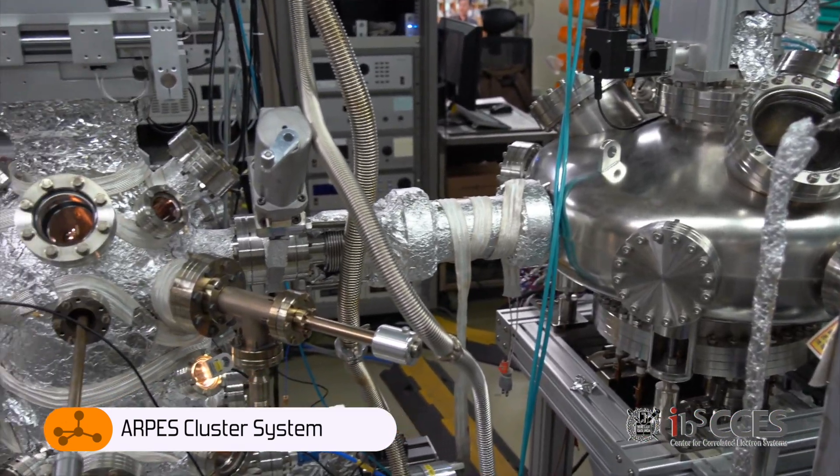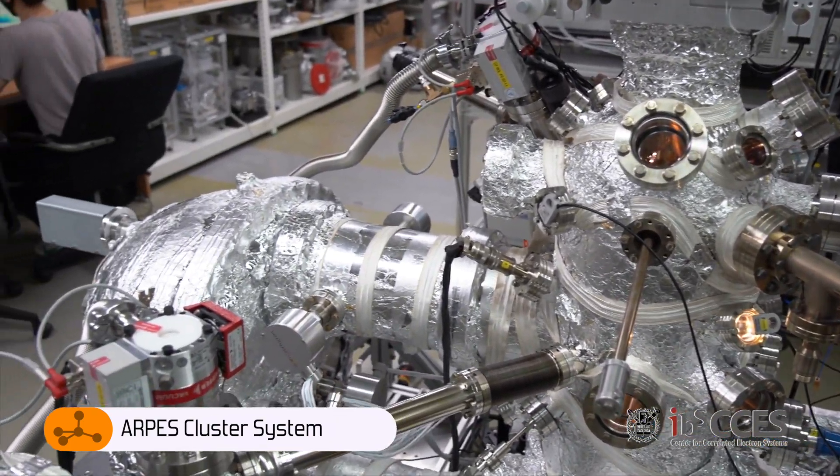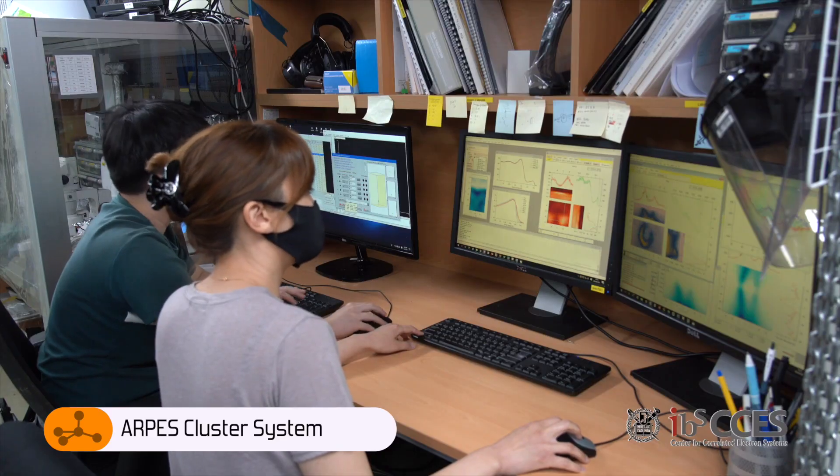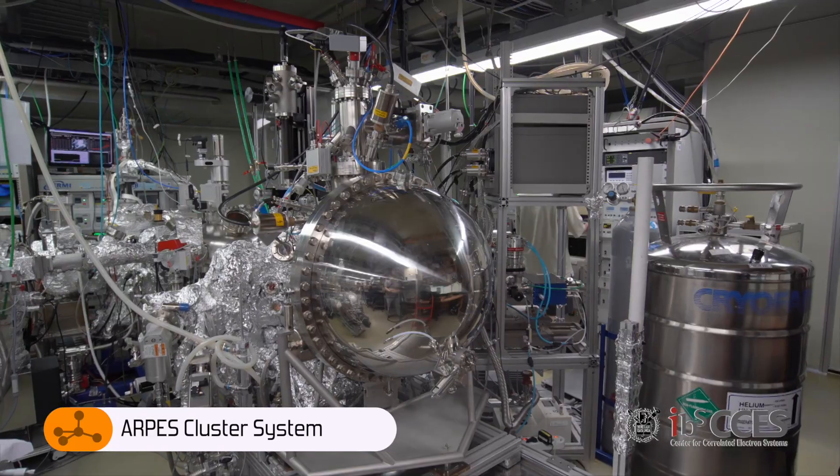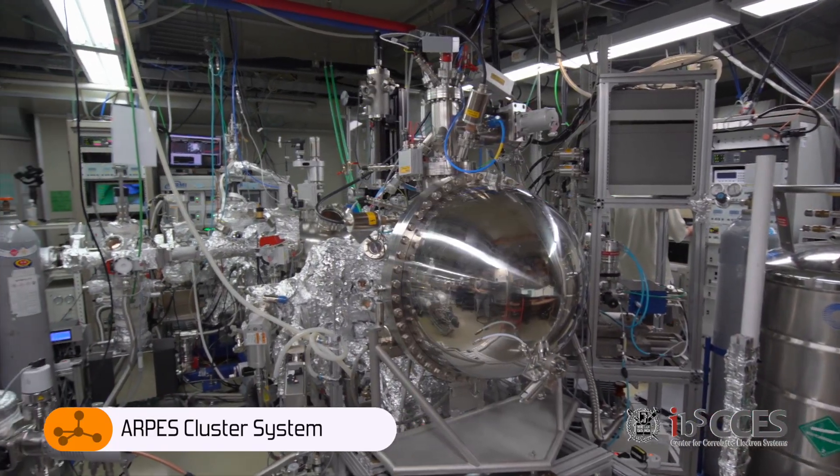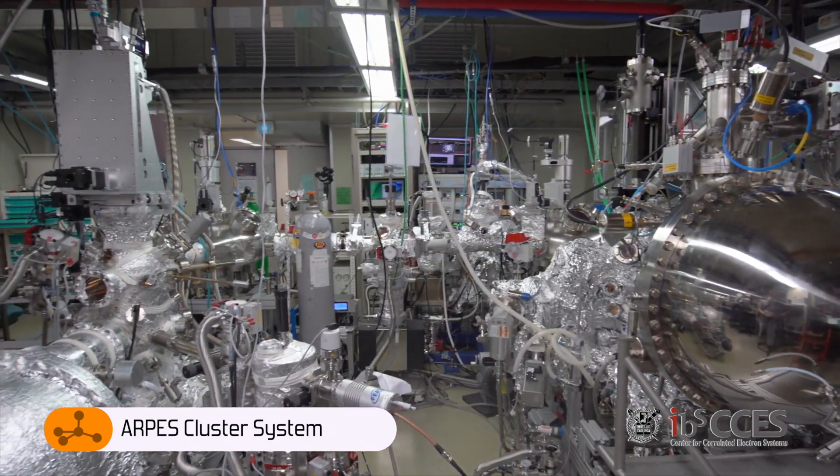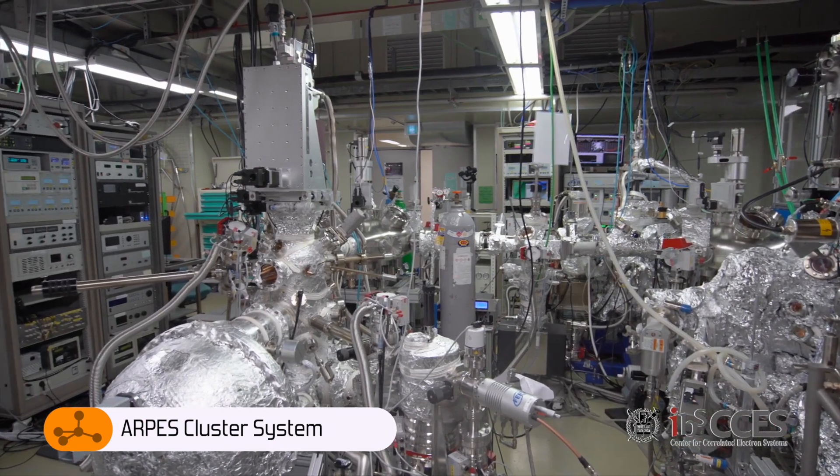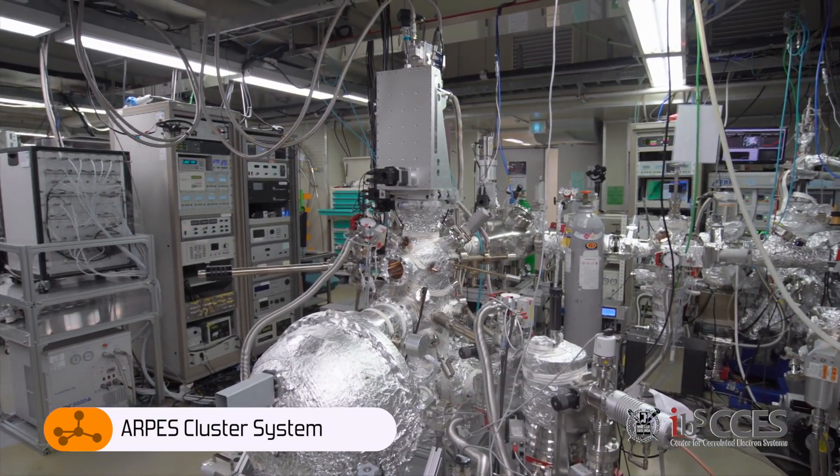In our second ARPES system, a piezo holder can be used to apply mechanical strain. In addition, alkali metals and CO2 gas can be evaporated on the surface of a sample in this chamber to measure the change of the electronic structure accordingly. To sum up, our ARPES cluster consists of two ARPES systems, MBE and PLD. All these are connected through a UHV transfer system. We can grow various thin films using PLD and MBE, and the electronic structure of these thin films can be measured under various experimental conditions.